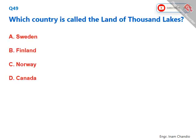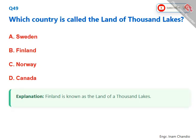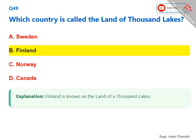Which country is called the land of thousand lakes? Finland is known as the land of a thousand lakes. The correct answer is B. Finland.